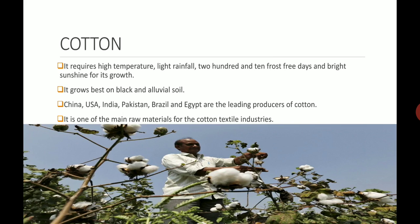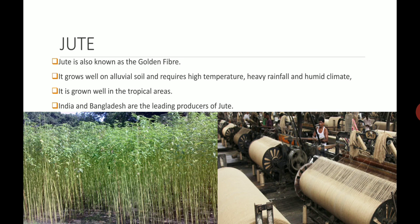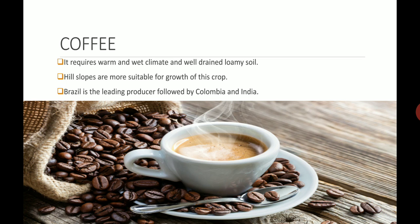Jute is also known as the golden fiber. It grows well on alluvial soil and requires high temperature, heavy rainfall and a humid climate to support its growth. It grows well in the tropical region. India and Bangladesh are the leading producers of jute. On the left you can see the jute plant, and on the bottom right of your screen you can see how jute is manufactured from the plant.